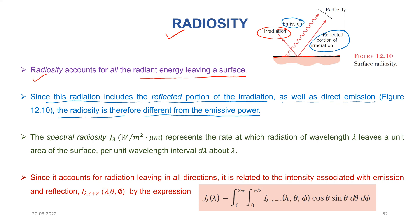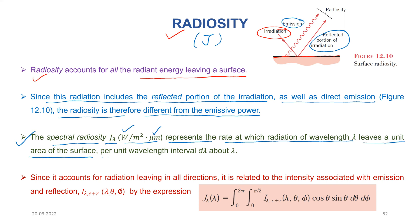Now we discuss about the spectral radiosity, which is represented by J_lambda, and the total radiosity is represented as J. J_lambda has units of watts per meter squared per micrometer. It represents the rate at which radiation of wavelength lambda leaves a unit area of the surface per unit wavelength interval d_lambda about lambda. Since it accounts for radiation leaving in all directions, it is related to the intensity associated with emission and reflection.